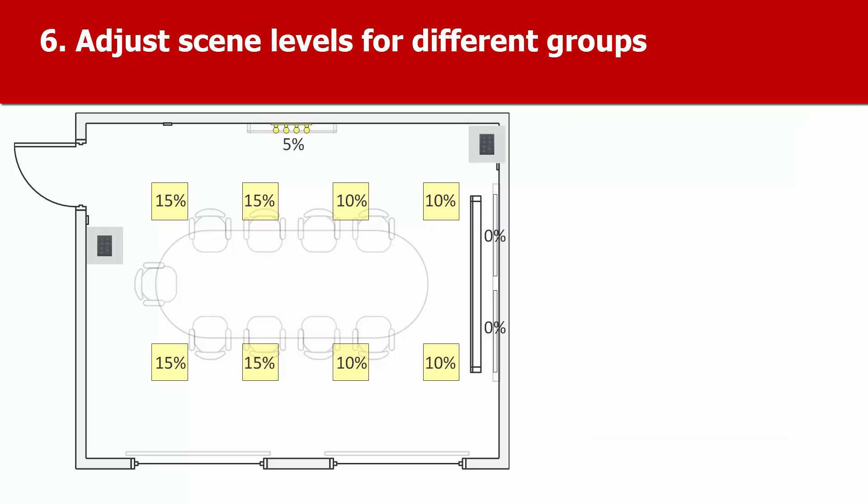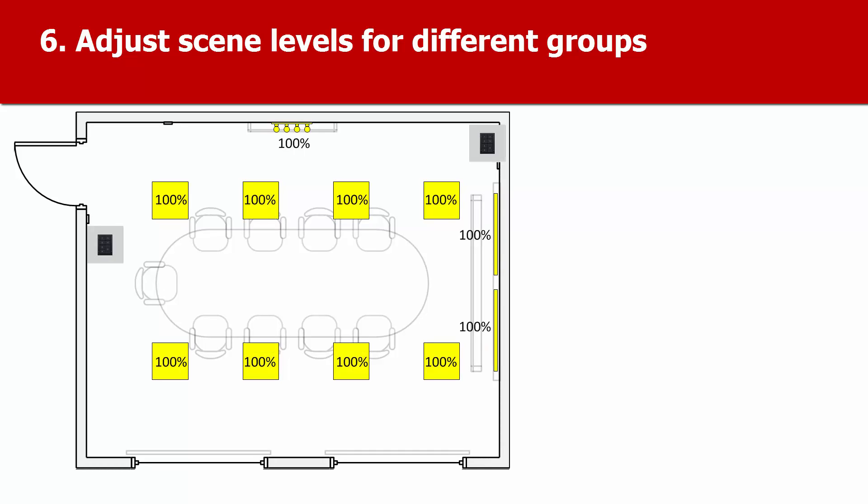For some rooms, the default lighting scenes - that's scene 1 as 100%, scene 2 as 75%, scene 3 as 50%, and scene 4 as 25% - might be what you need.